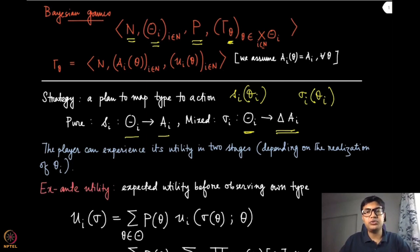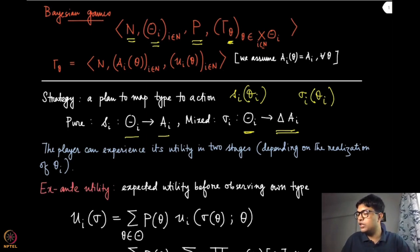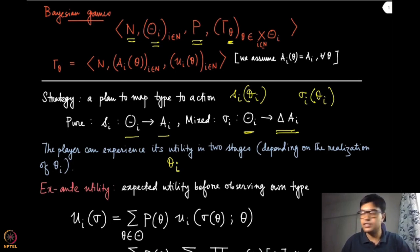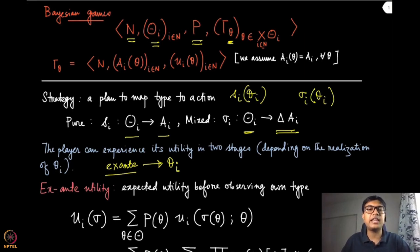Now we will use three terms that show how a player experiences its utility in multiple stages. In game theory, these stages are denoted by Latin names. Ex ante is before nature chooses theta_i for player i. According to the definition of the Bayesian game, the common prior realizes this theta_i. Before theta_i has been realized, player i can take a decision, and that decision is called the ex ante decision. If you are trying to calculate the utility or taking an action before realization, all these things are called the ex ante utility or ex ante action.